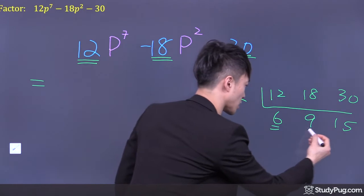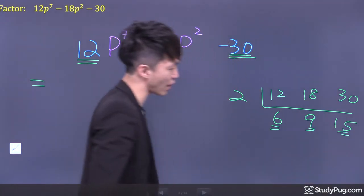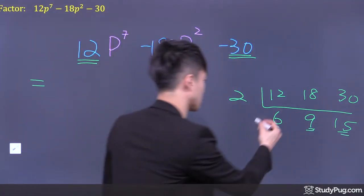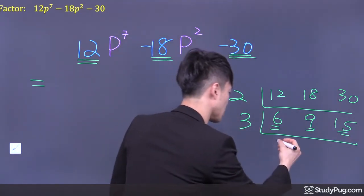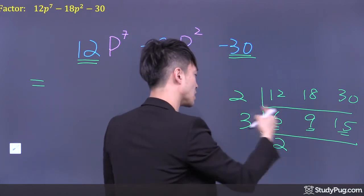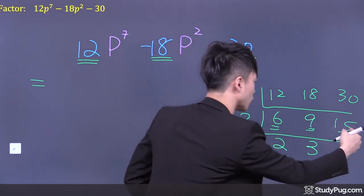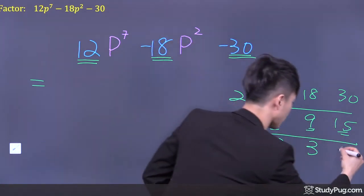Now focus on these three numbers. Is there a common factor? Yes. They are all divisible by 3. 6 divided by 3 equals 2. 9 divided by 3 equals 3. 15 divided by 3, we get 5.